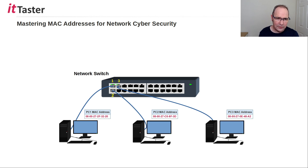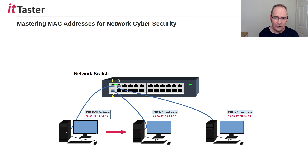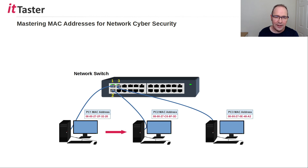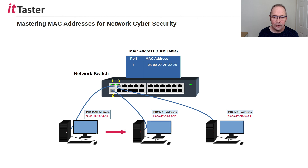In this example, PC1 needs to communicate with PC2. A frame is sent from PC1's network interface card to the switch. The network switch examines the source MAC address of the frame sent by PC1 to learn its MAC address and the port that it was received on. The switch then stores PC1's MAC address and the port number — port 1 — in its MAC address table.